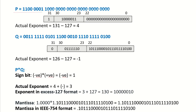For P in binary, using the IEEE 754 format, the 31st bit is 1, which signifies it is a negative number. The next 8 bits give us the exponent, and the remaining bits are the mantissa. The exponent in binary is 10000011, which in decimal is 131. Subtracting 127 (since it is in excess-127 format), the actual exponent is 131 minus 127, which equals 4.